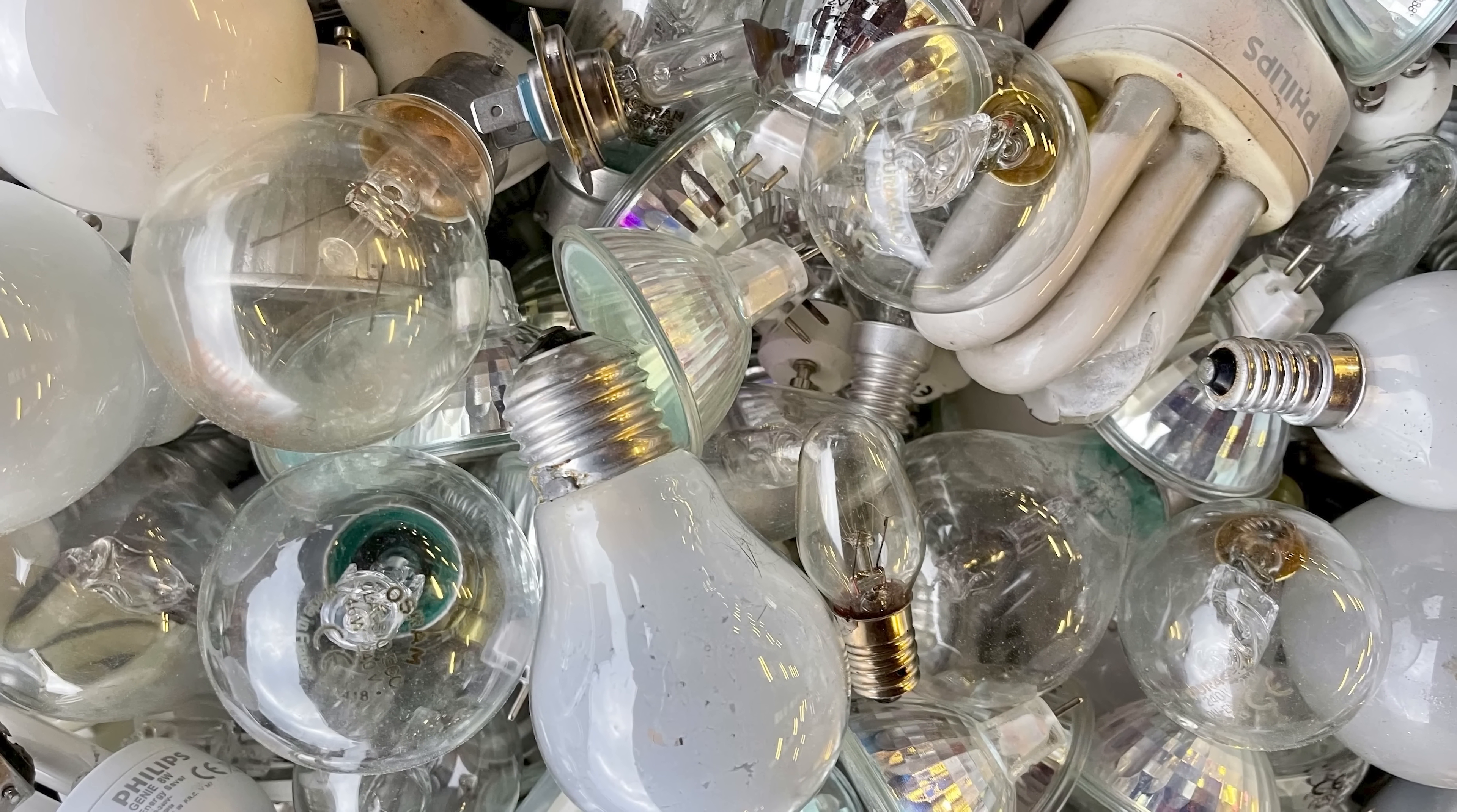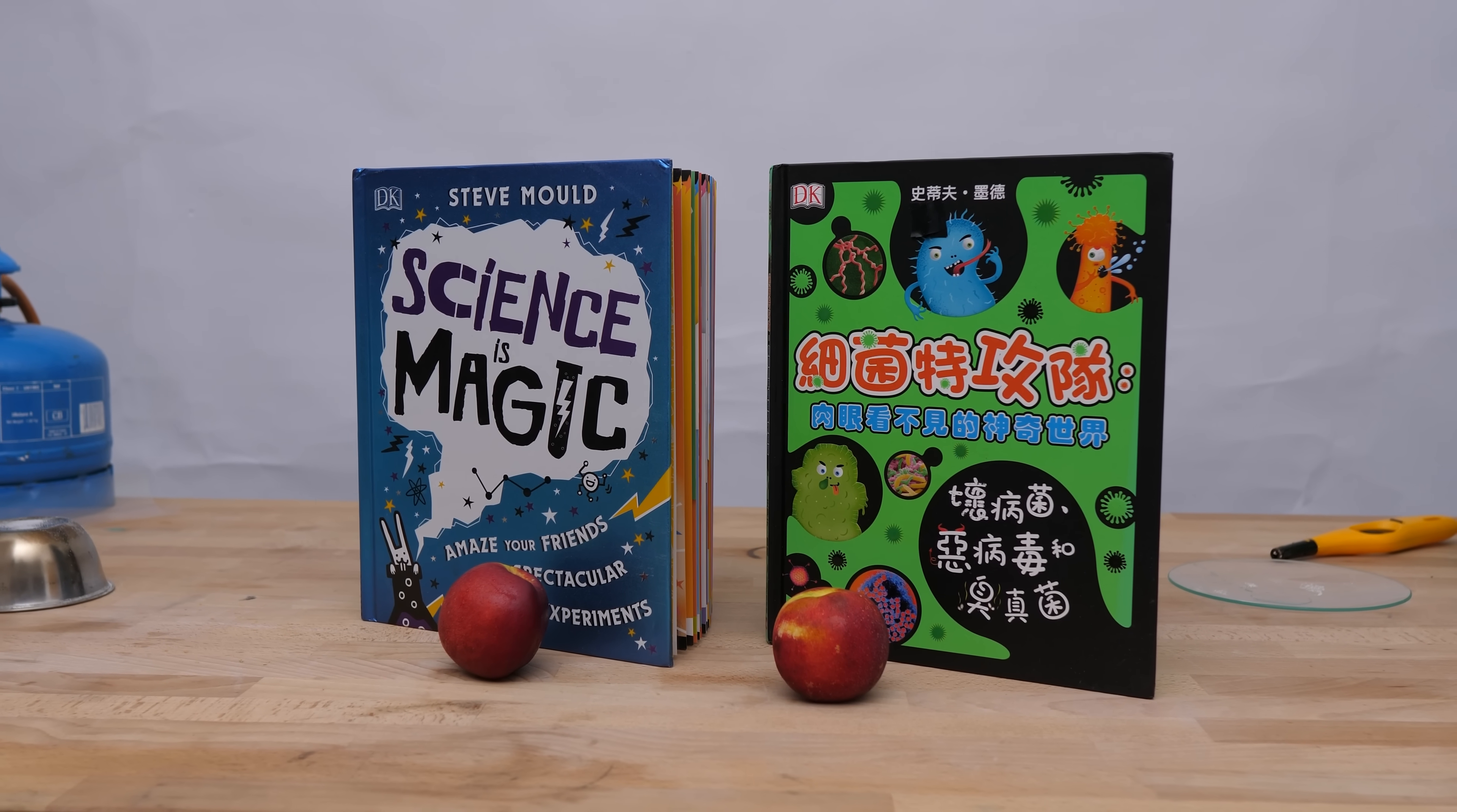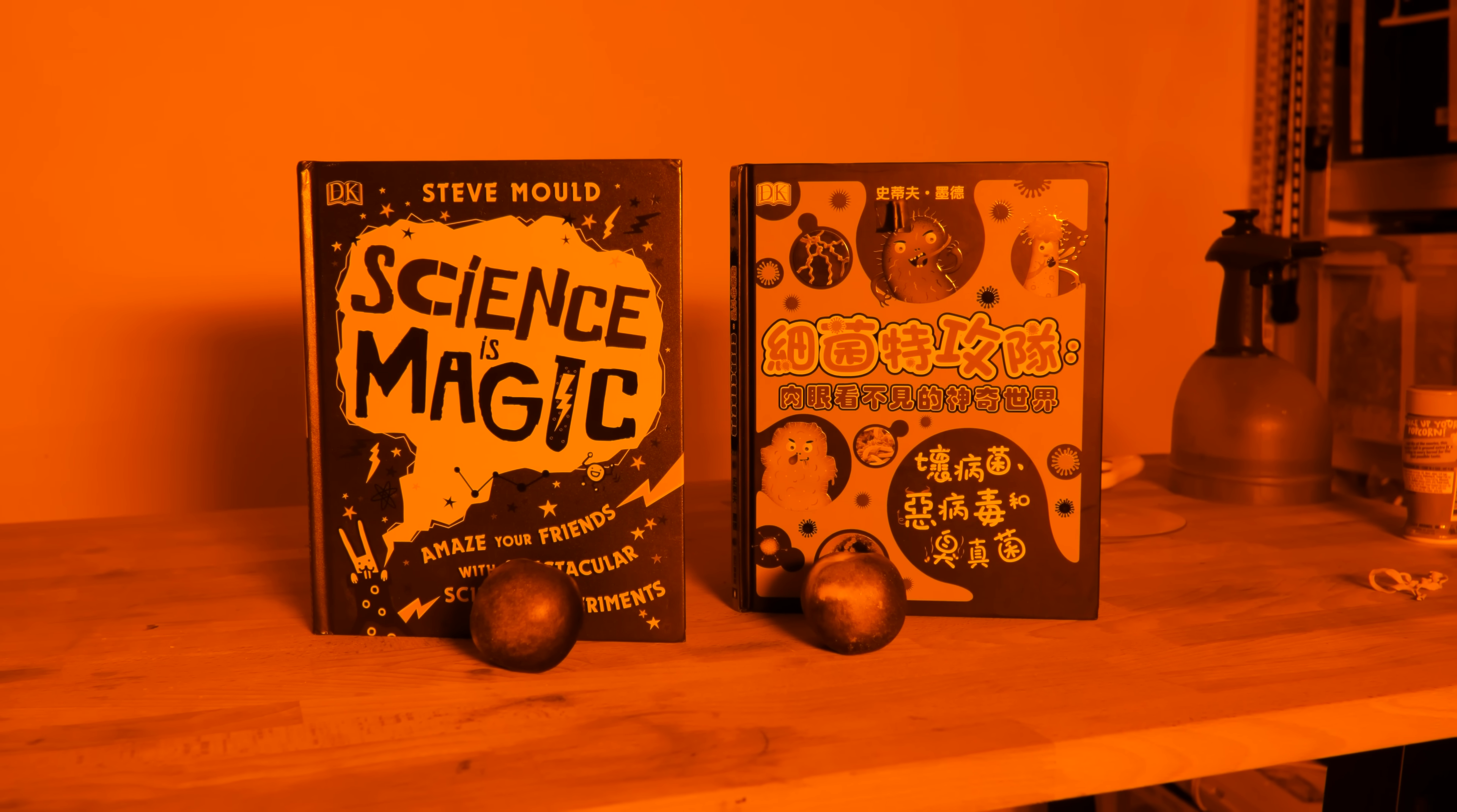There's this number, the CRI for a light bulb, and it tells you how good is this light source at making colors look the way they are naturally. Sunlight has a CRI of 100, and a light source that doesn't allow you to distinguish color at all would have a CRI of 0. And sodium streetlights have a CRI of 0.